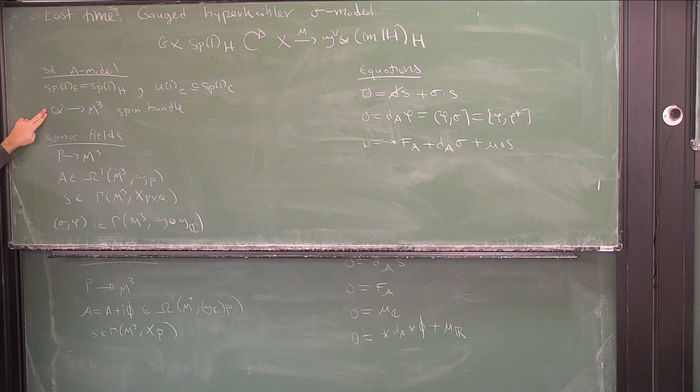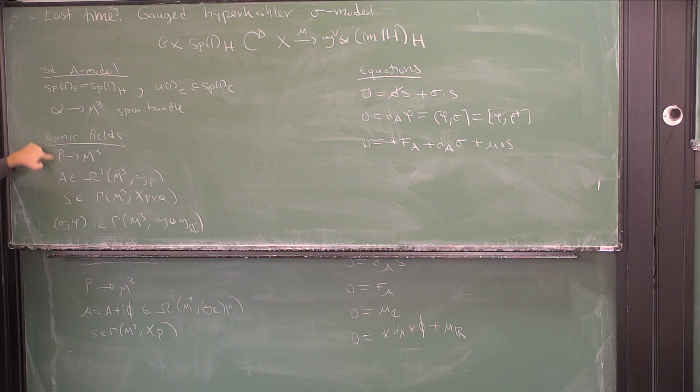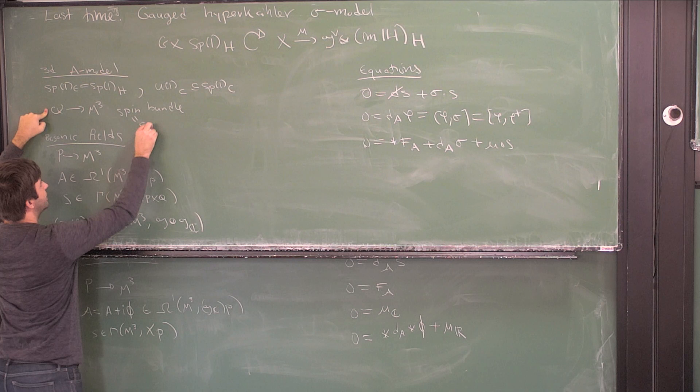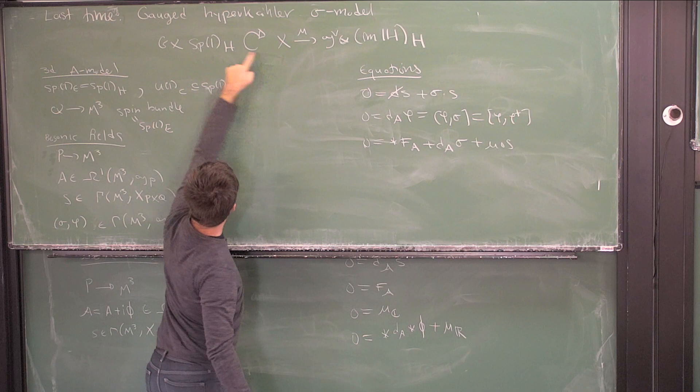Choosing this U(1) chooses a complex structure — it's the same data. When you have this complex structure, it lets you break up the field that would have been valued in the imaginary quaternions into real and complex parts. The fields in this theory also depend on a background spin bundle on my three-manifold. The fields are basically a principal bundle on my three-manifold, and then a section — I can take my G principal bundle and my spin bundle, where my spin here is Spin(3) which is Sp(1)_E.